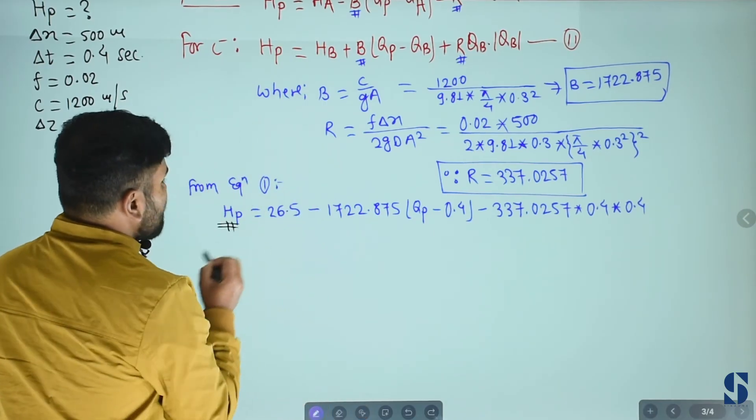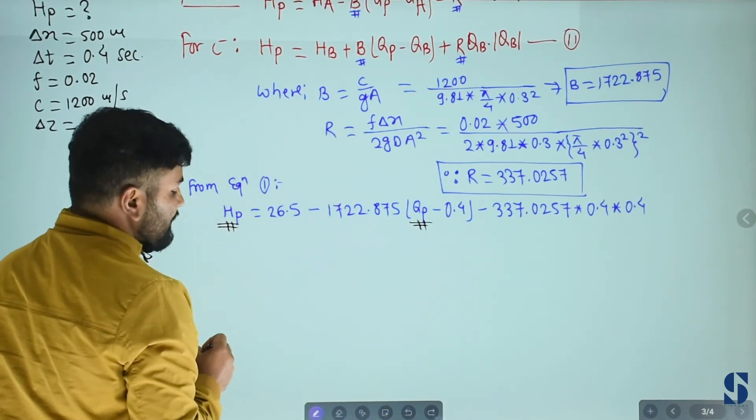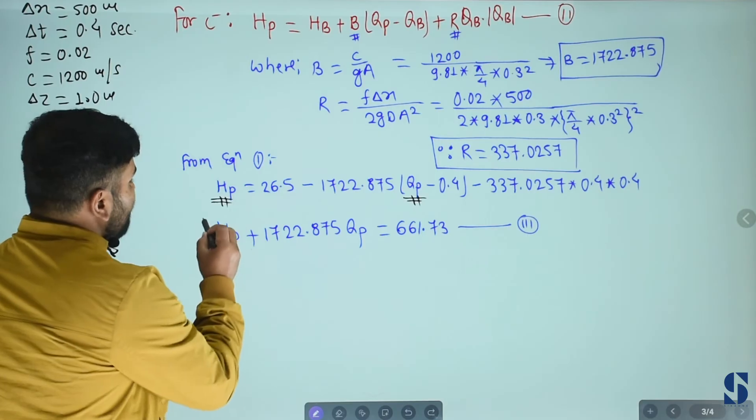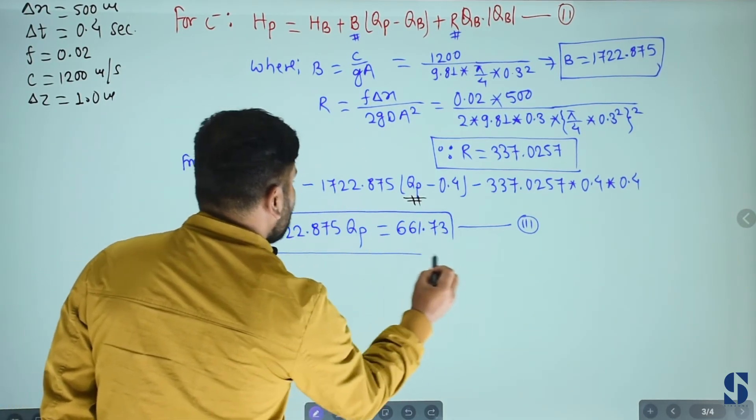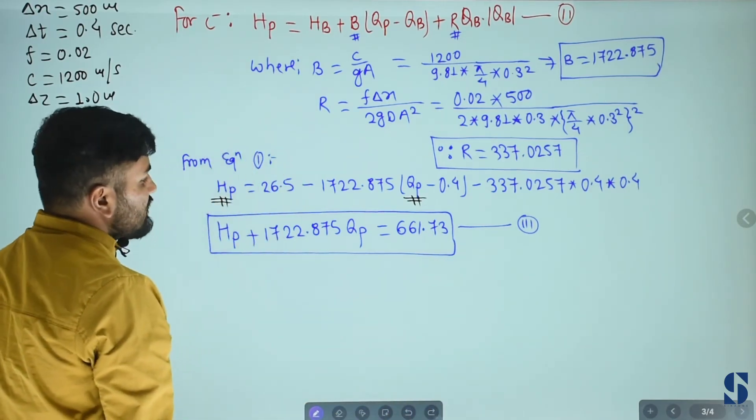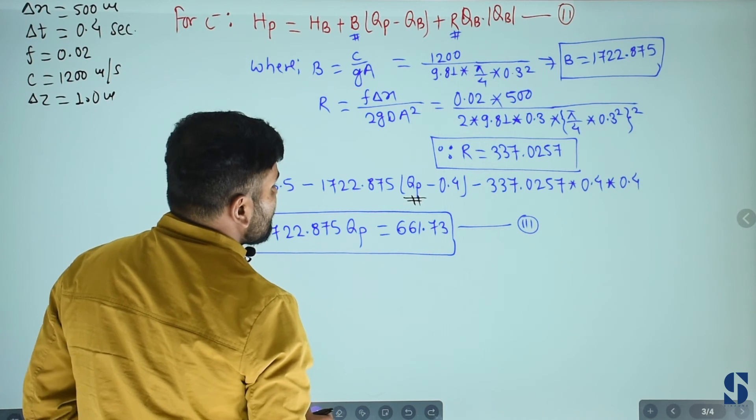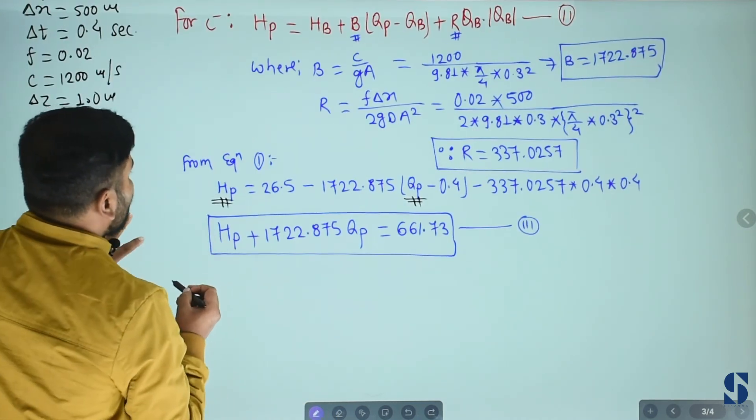HP and discharge QP are unknown, which we need to find out. We calculate the value of HP and QP. Equation is HP plus 1722.875 QP equals to 661.73. This is equation first.